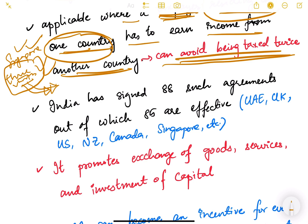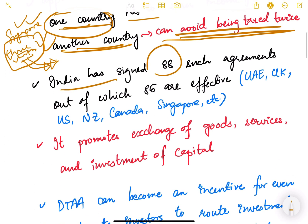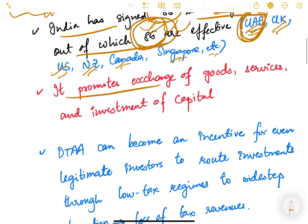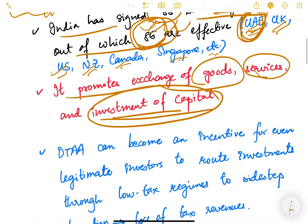India has signed 88 such agreements, out of which 85 are effective. The major countries with which we have DTAA include UAE, UK, USA, New Zealand, Canada, Singapore, and others — because so many NRIs live in these countries. DTAA promotes exchange of goods, services, and investment of capital. If people are not required to pay double taxes, they will exchange more goods and services and invest more freely.